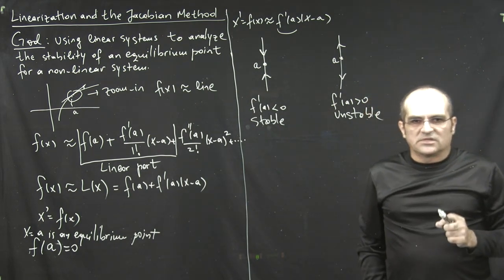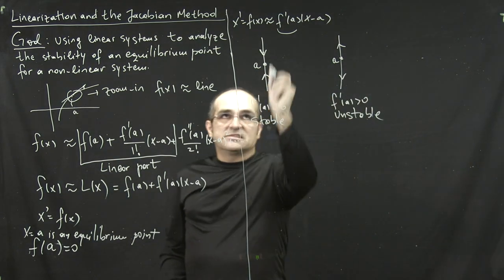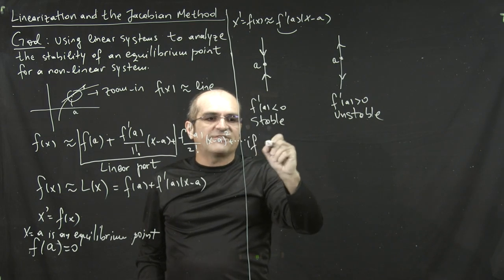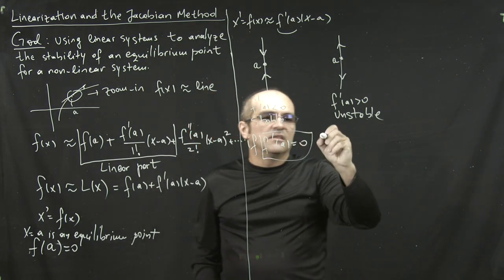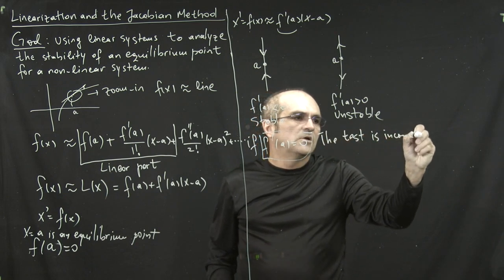Now, there's a very important and crucial thing here to notice. If, because, remember, that's not equal to f of x, that's an approximation. If f prime of a is zero, then this test that we apply here is inconclusive. So,